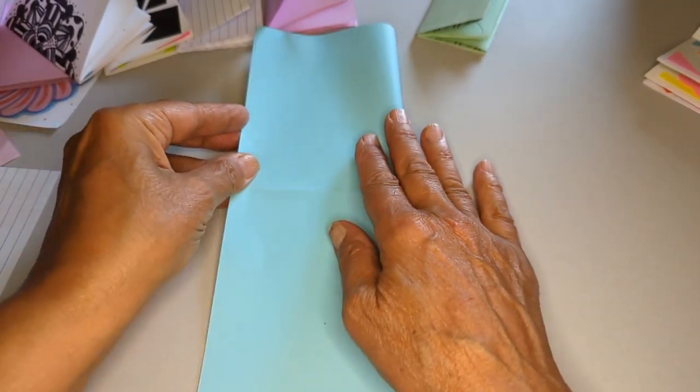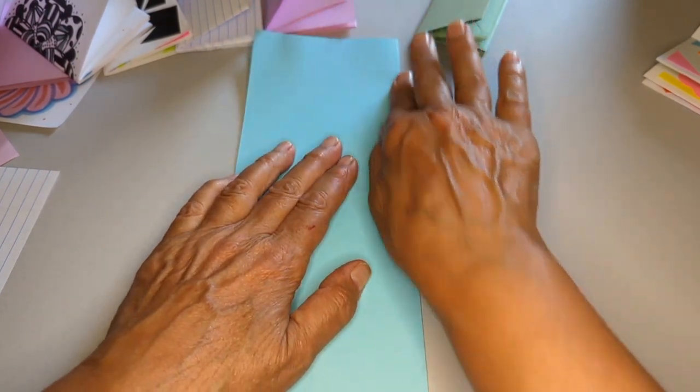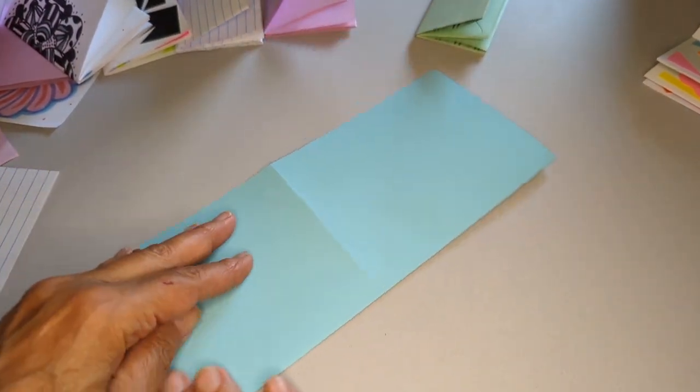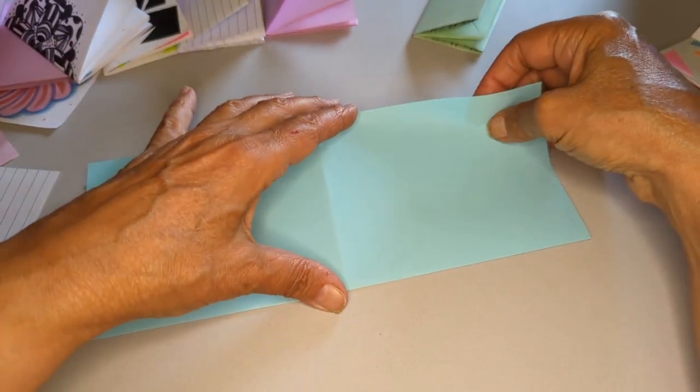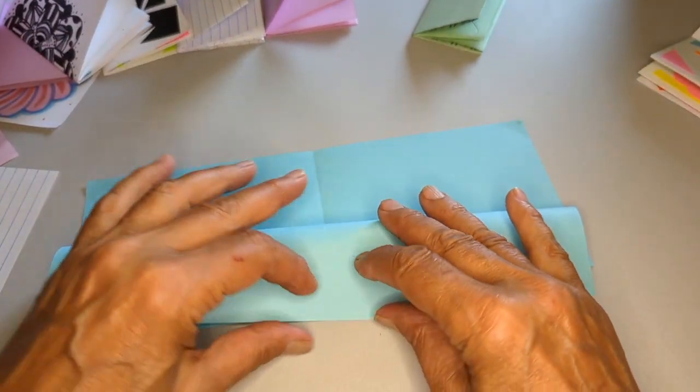Again, I'm going to do the same sequences of folds. I just started differently. So here it's long and narrow. Now I'm going to do the banana peel fold in this position.